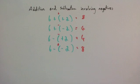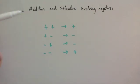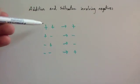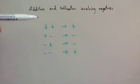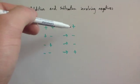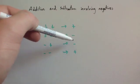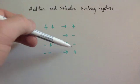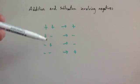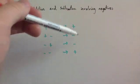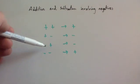When adding and subtracting with negatives, if you've got two signs directly beside each other, you replace them with one sign. Adding a positive: replace with a plus. Adding a negative: replace with a subtract. Subtracting a positive: replace with a subtract. Subtracting a negative: replace with an add. In other words, if the two signs are the same — plus and plus, or minus and minus — put in a plus. If they're different signs, put in a subtract.